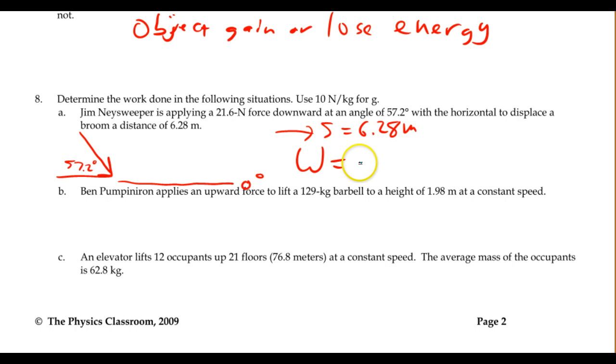To calculate the work, it's going to be the force applied, 21.6 N, times the distance moved, 6.28 meters, multiplied by the cosine of the angle between the two. Now the displacement is this way, and the force is along this direction, so that is 57.2 degrees between the two. And don't worry about negative or anything else, it's just the absolute value of that angle. So in this case, that's going to be cosine of 57.2 degrees.